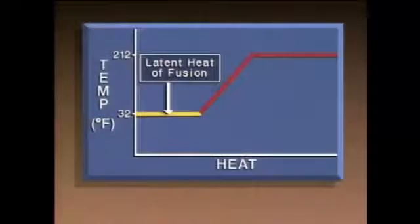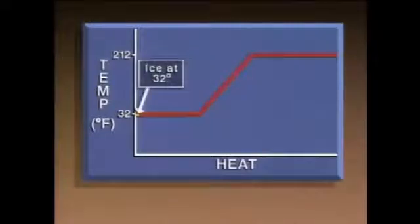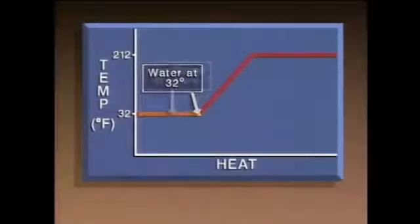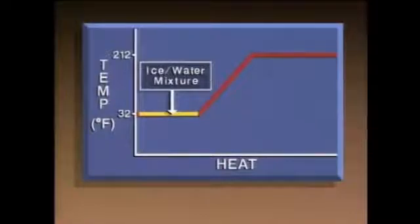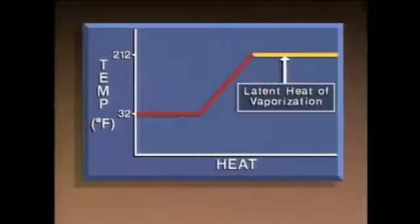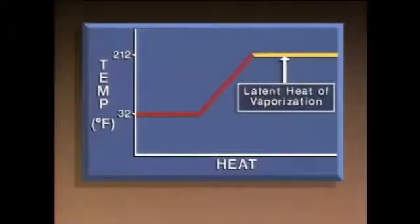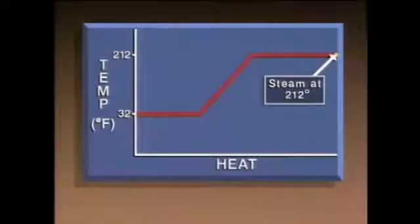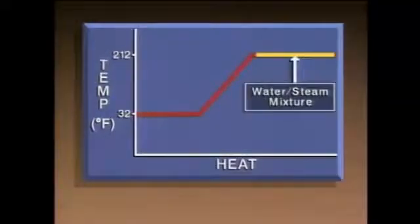The latent heat of fusion is the amount of heat required to melt a substance without a change in temperature or pressure. This point represents ice at 32 degrees and this point represents water at 32 degrees; the line between these points represents an ice-water mixture. The horizontal line at 212 degrees represents the latent heat of vaporization — the amount of heat required to vaporize a substance without a change in temperature or pressure. This point represents water at 212 degrees and this point represents steam at 212 degrees, so the line between these points represents a water-steam mixture.